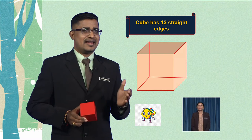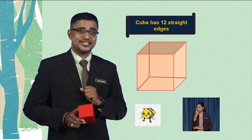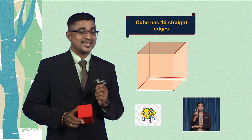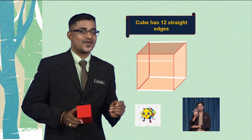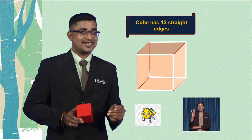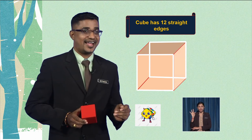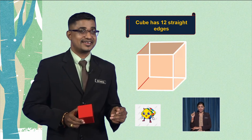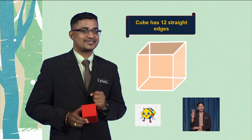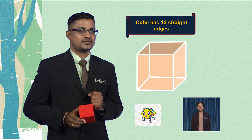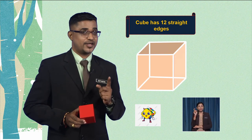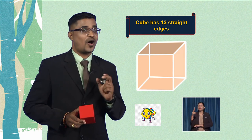The length of each edge of the cube is the same. Let us check one at a time: 1, 2, 3, 4, 5, 6, 7, 8, 9, 10, 11, and lastly 12. So it is proven that the cube has 12 edges altogether.